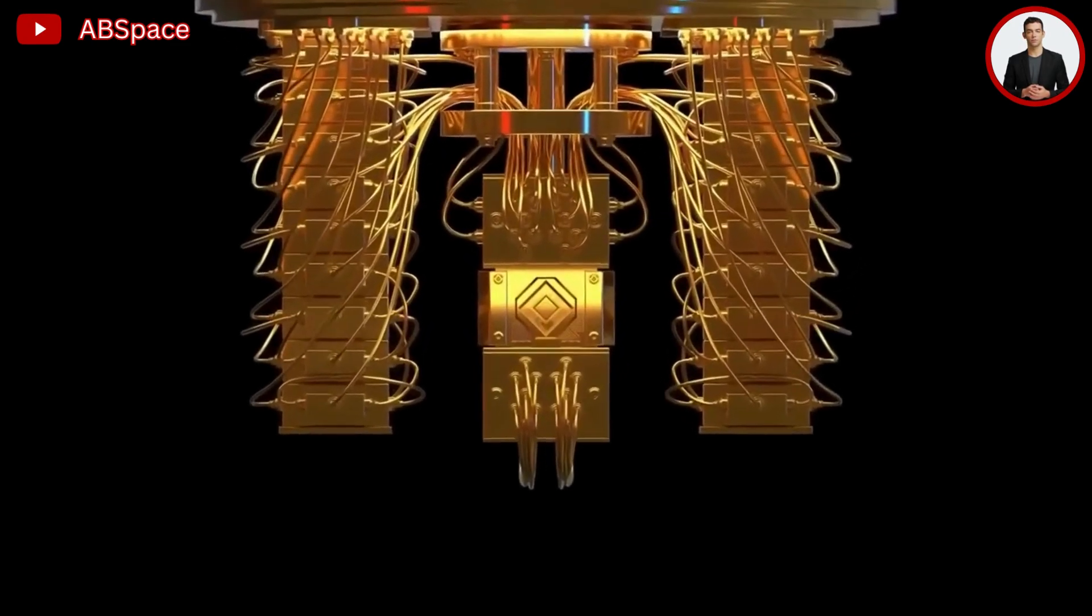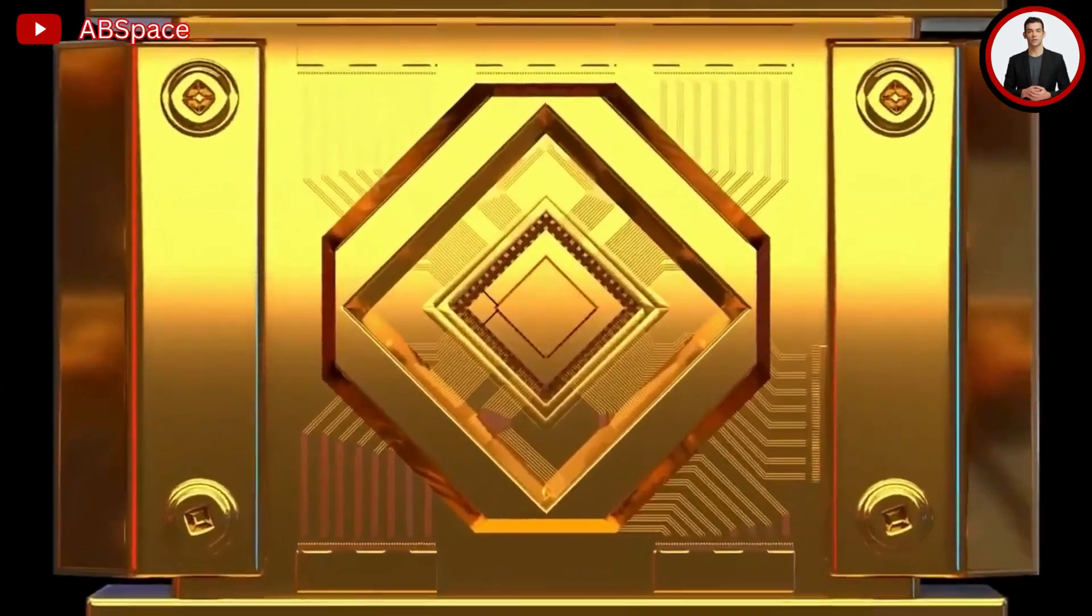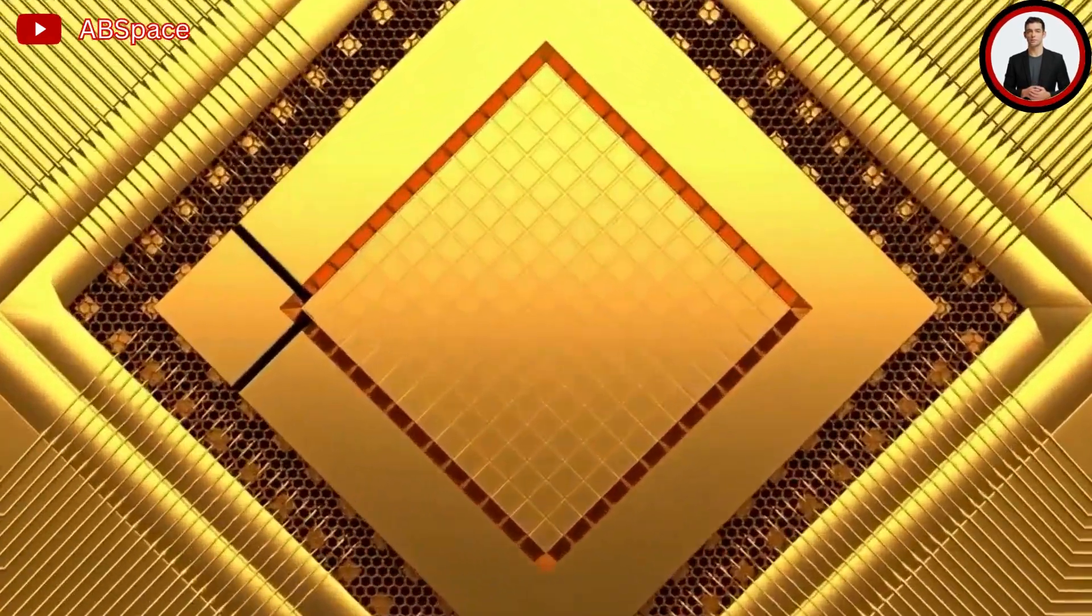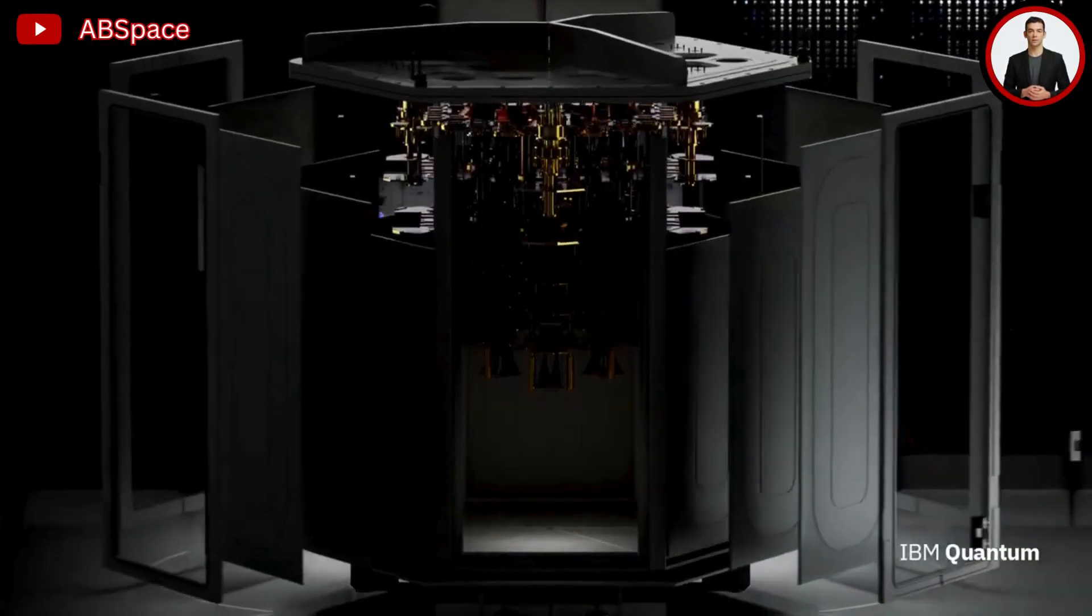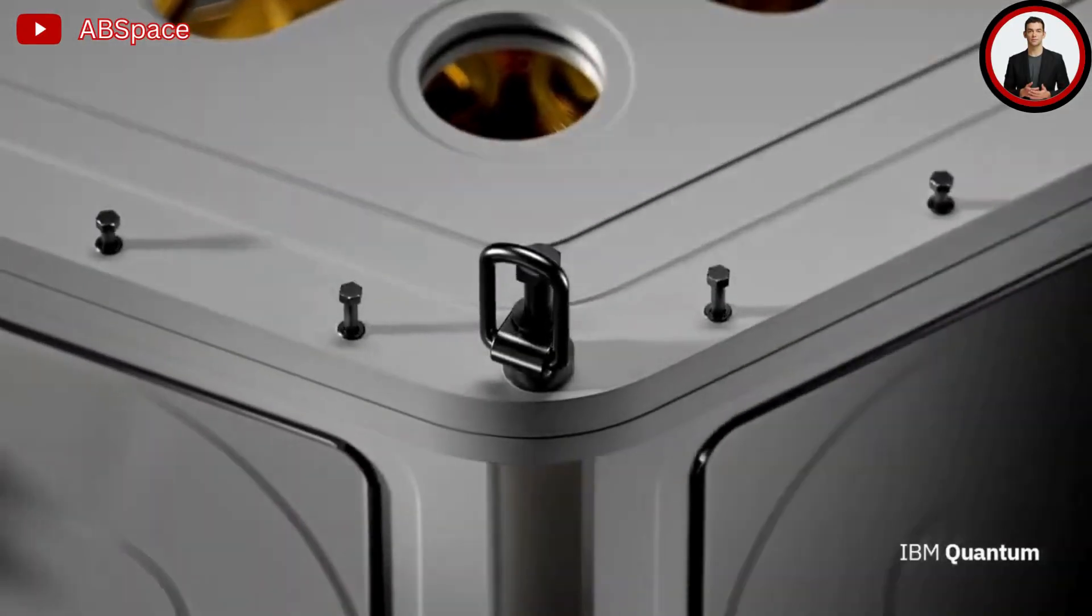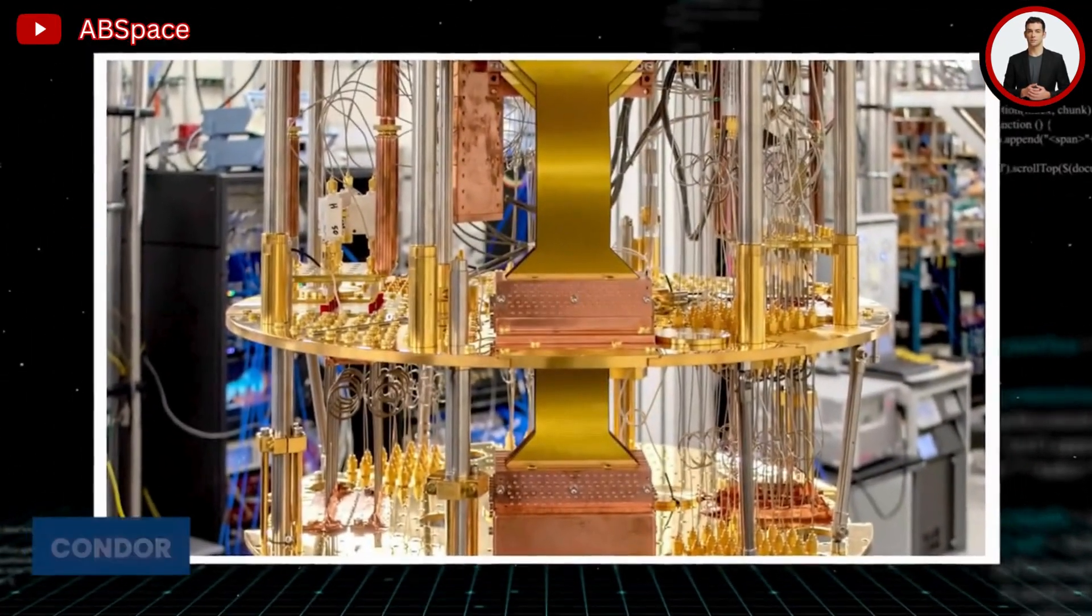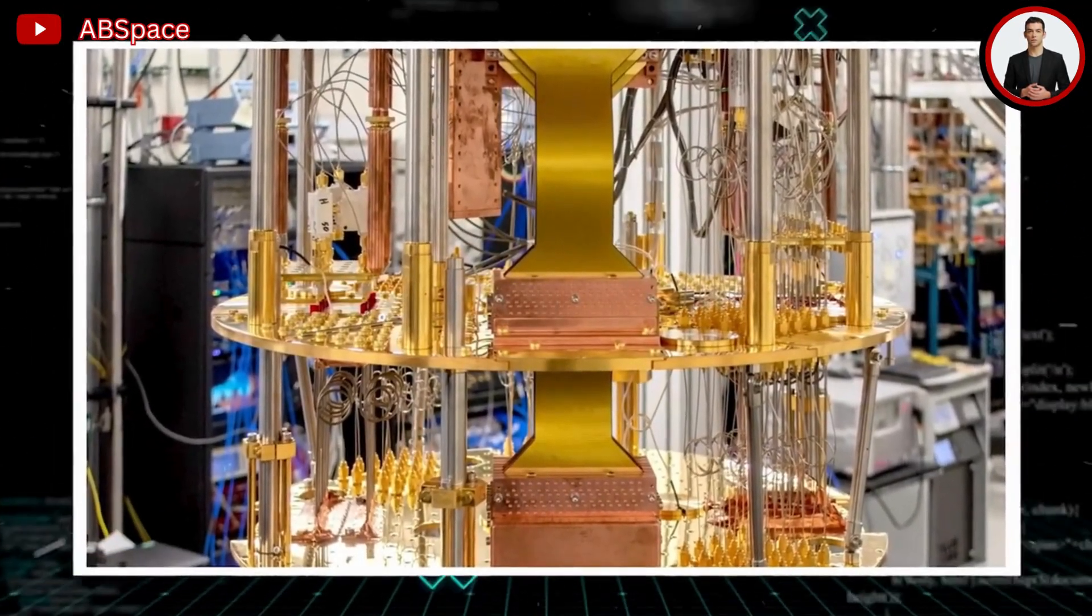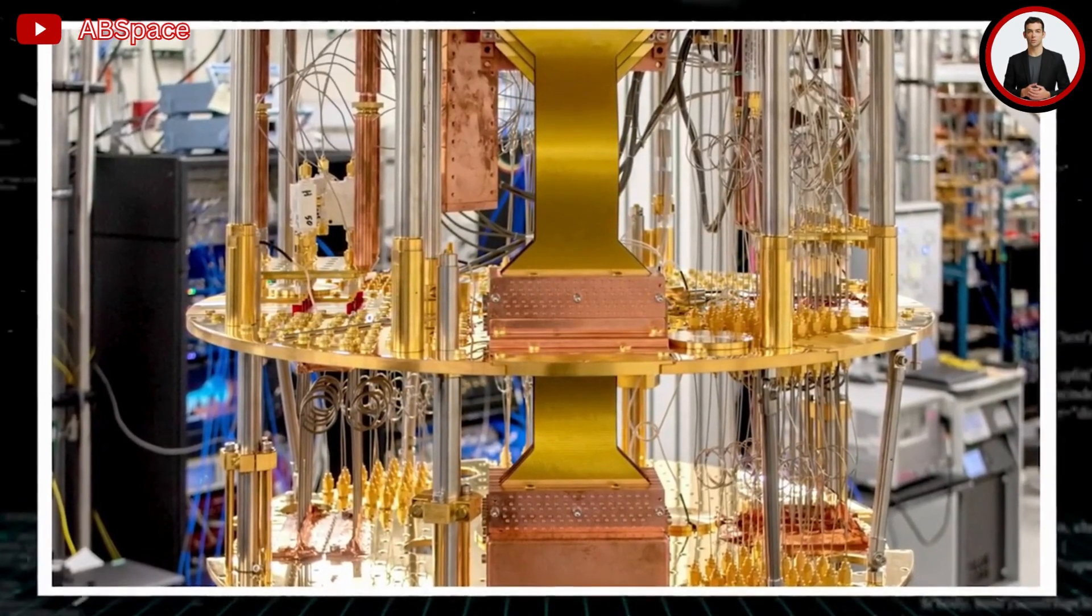However, the company has said it will shift gears and concentrate on making its machines more error-resistant rather than expanding their size. Over several years, IBM has been adhering to a quantum computing roadmap that has annually increased the amount of qubits by approximately twofold. This device, introduced on December 4th and named Condor, is comprised of 1,121 superconducting qubits organized in a honeycomb design.